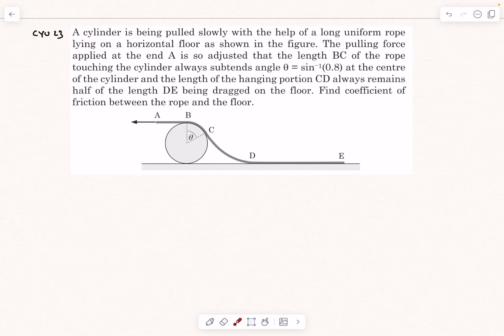In the first line they've given that the cylinder is being pulled slowly. So by extension we can also say that the rope is being pulled very slowly, which essentially means the acceleration of the rope is going to be zero. So basically we can use sigma F equals zero everywhere along the rope, and that's how we are going to be starting out with the solution.